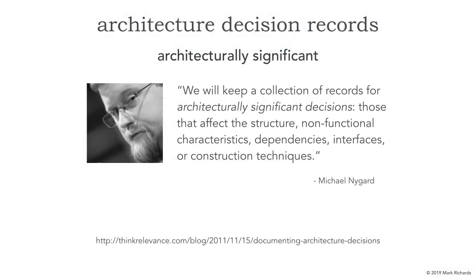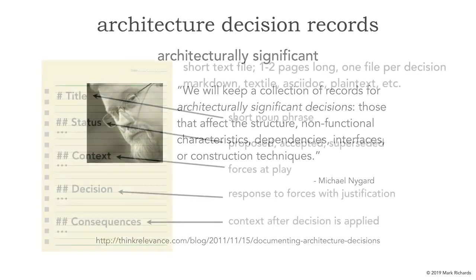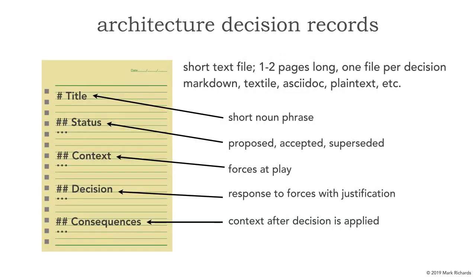In lesson 55, we learned about architecture decisions and the use of architecture decision records. Michael Nygaard had coined these and said that we will keep a collection of records for architecturally significant decisions. Using ADRs — architecture decision records — was a great way not only to document an architecture decision but also to form a justification. In this lesson number 68, we're going to take one step further and see how to ensure compliance of these architecture decisions in an automated fashion.